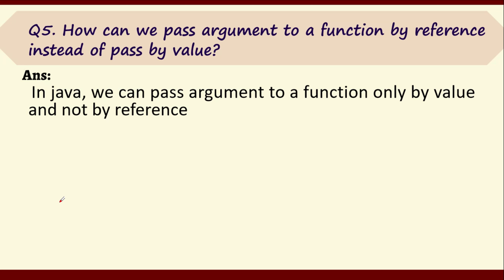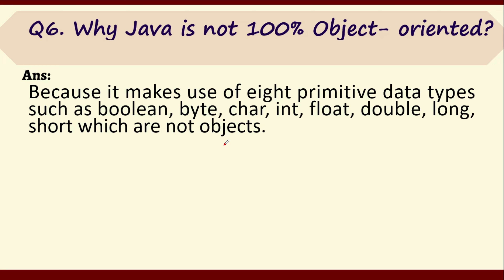Question number five: how can we pass arguments to a function by reference instead of pass by value? In Java, we can pass arguments only by value and not by reference. This is unlike other programming languages like C or C++, where the concept of pass by reference also exists.